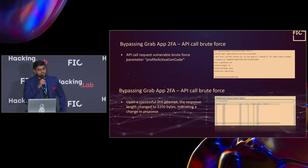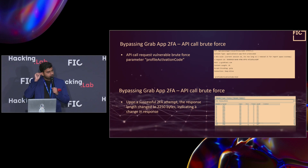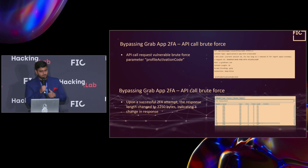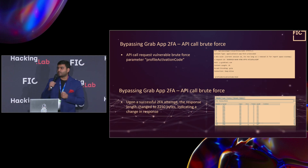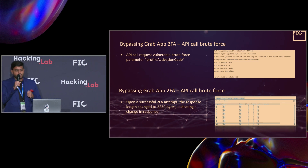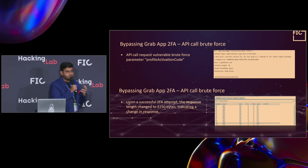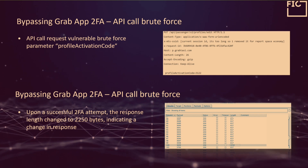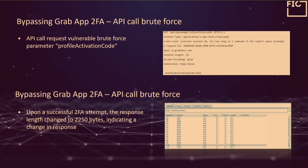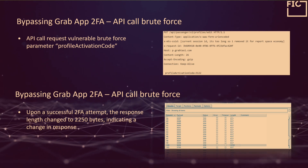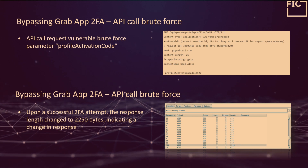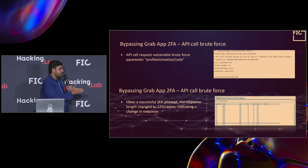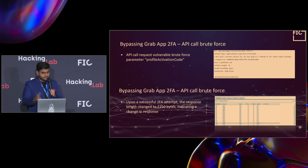There is an app called Grab, which is Asia's number one ride-hailing app. We were able to bypass 2FA using a simple brute force attack using Burp. Their API call request for 2FA was in a parameter called profile activation code, which was a four-digit code, and there was no rate limitation on it. Using Burp Suite's intruder tool, we were able to differentiate between the content length of a valid 2FA code and an invalid 2FA code, and this is how we bypassed it.